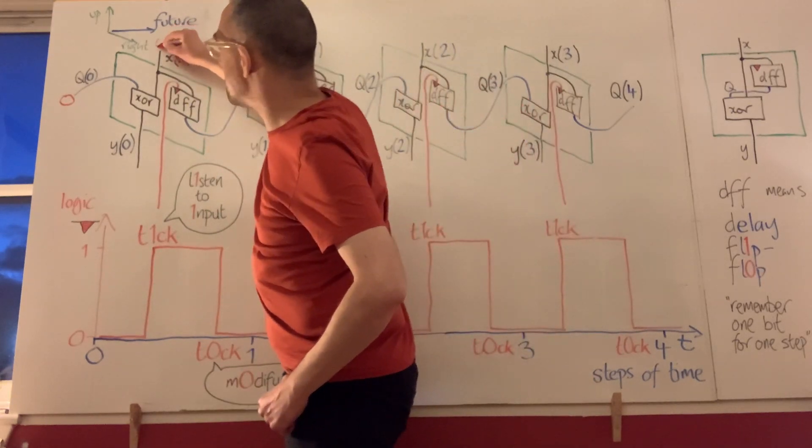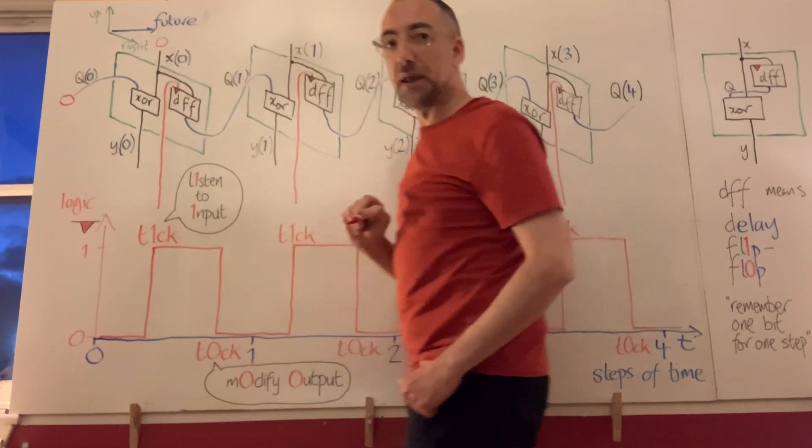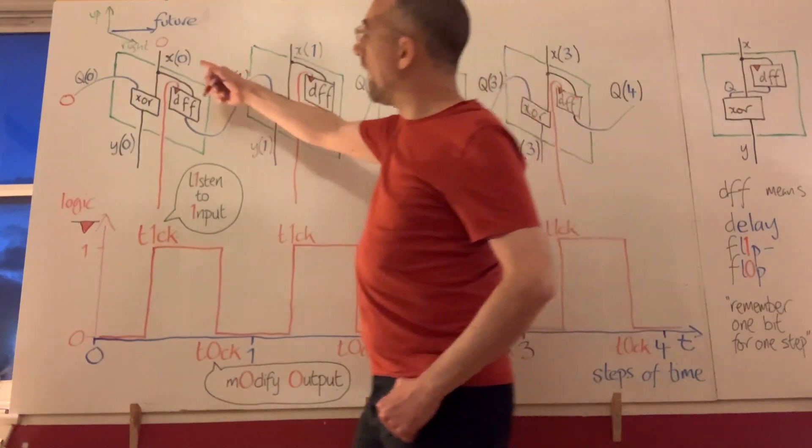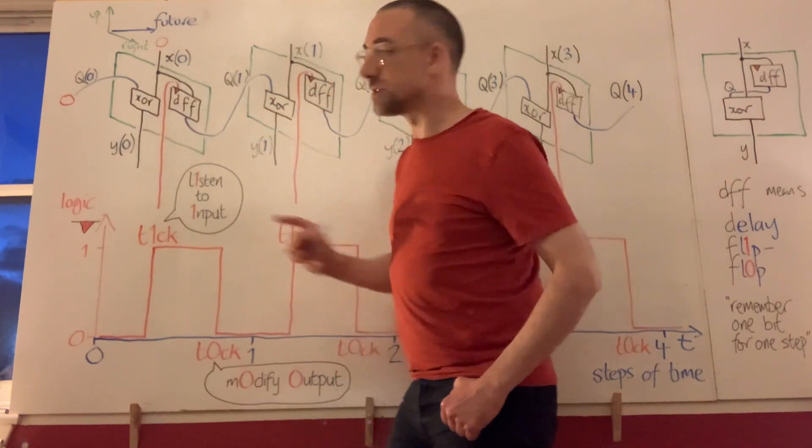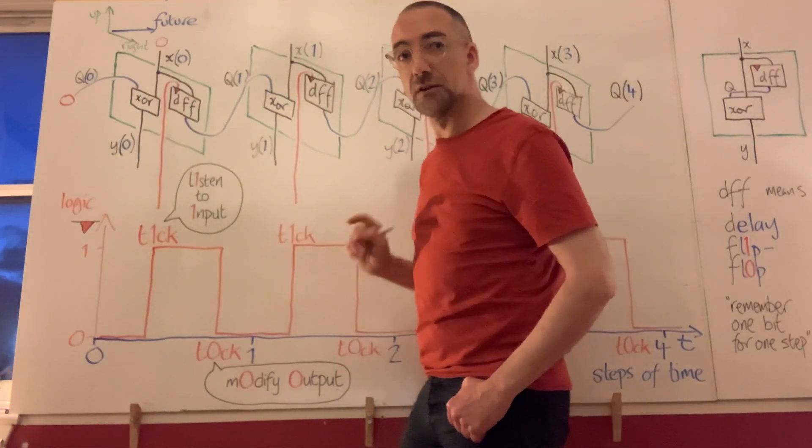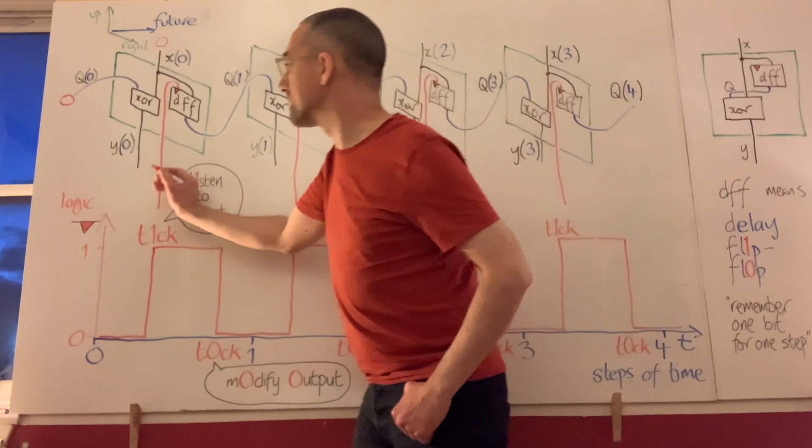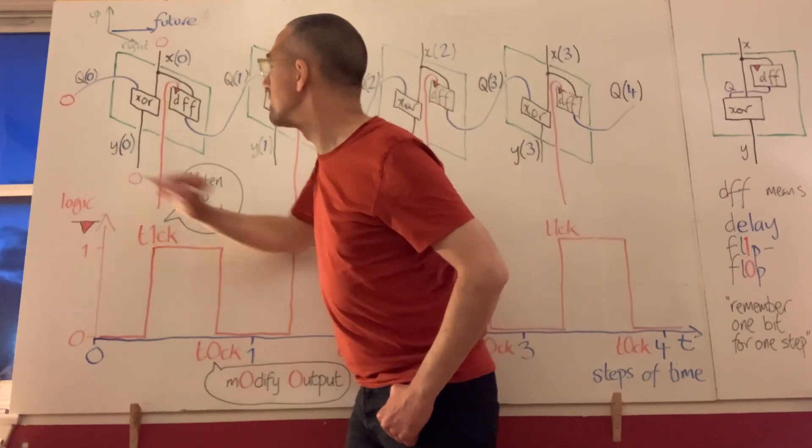we choose to send a 0 signal coming in on the X input. Then we can compute just using the ordinary logic for exclusive OR that a 0 will come out on the output.